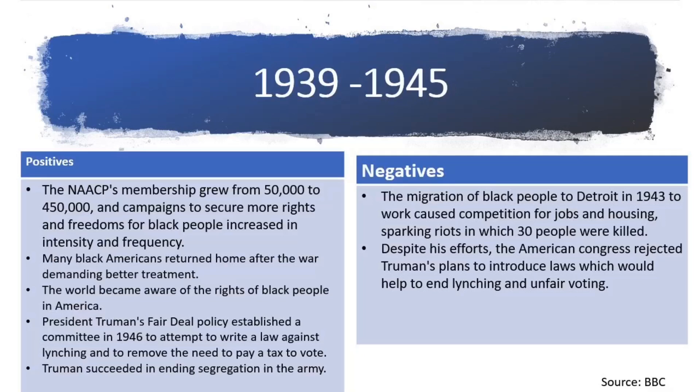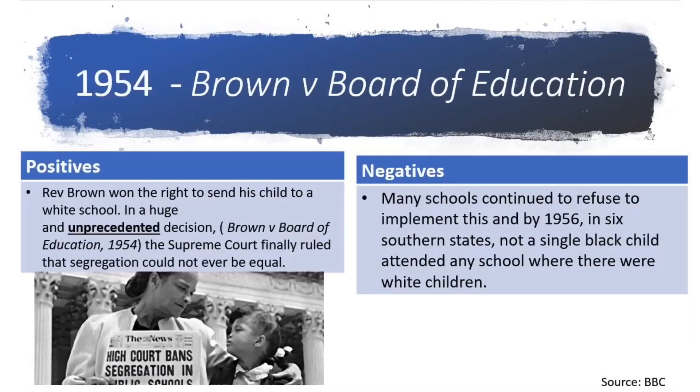During this time, Truman was trying to make progress. However, the Congress at the time made this impossible. They rejected plans to introduce laws which would help end lynching and unfair voting.